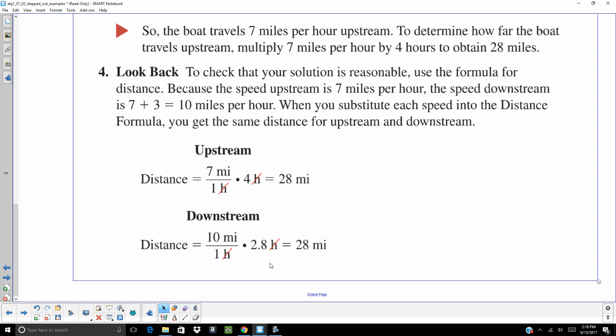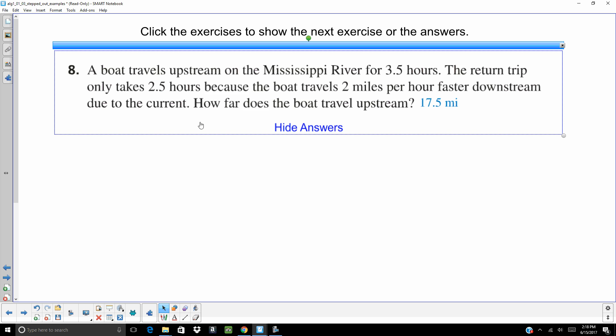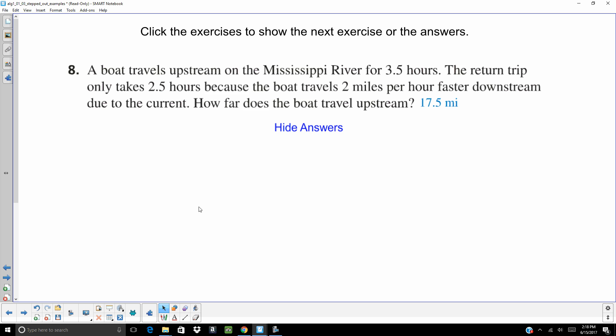So, you might want to go back through and look at this problem a second time. But, this is how you would approach it. Try doing this one on your own. Take a second and pause. When you think you have the answer, let's click on it and see how you did. The answer is 17.5 miles. All right. So, that was solving equations with variables on both sides of the equation. Again, if you're having trouble, come into Math Lab or IPASS.